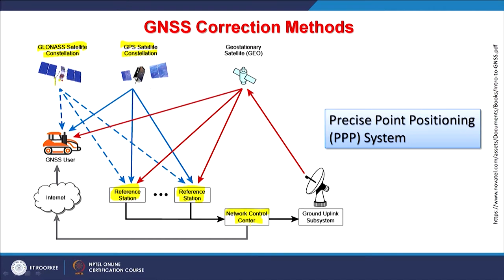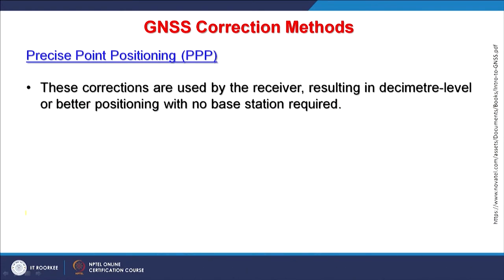These base stations are transmitting and collecting data, making corrections in the position — how much the position has to be corrected at that particular time when somebody is having a single receiver in the field. That correction is uplinked through an earth station to geostationary satellites. Through those geostationary satellites, any user can get a signal directly in the field in real time. One possibility is getting the signals directly from geostationary satellites, and another possibility is getting signals from the internet. These two options are now being explored, and this is what the Precise Point Positioning system is.